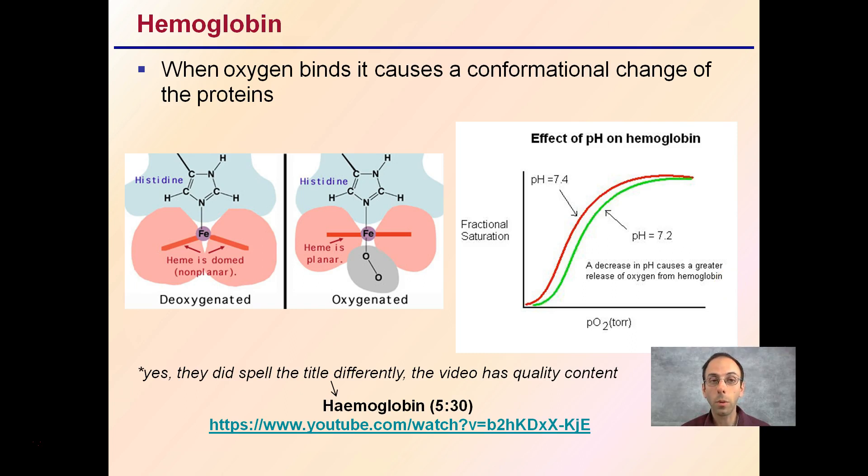Continuing on, when oxygen binds, it causes a conformational change in the proteins. We can see here, here's our change, deoxygenated versus oxygenated. You can see there's a change in shape here, non-planar versus planar. Because this is a protein, shape is very important. In addition, what can impact proteins? Well, heat is one.